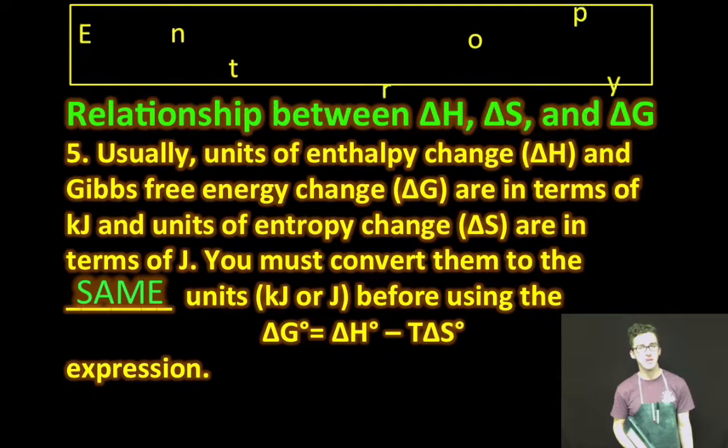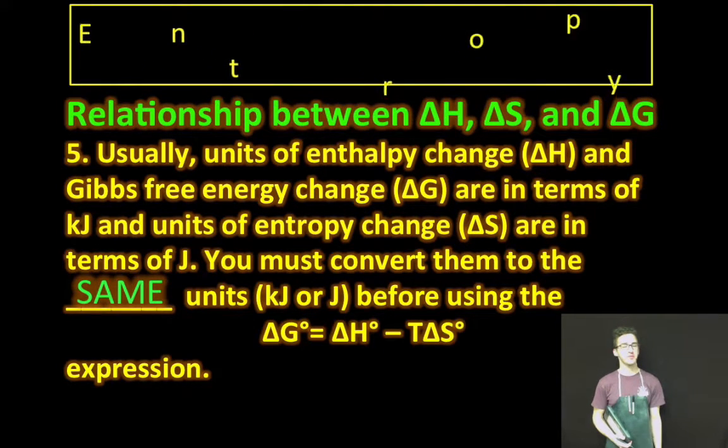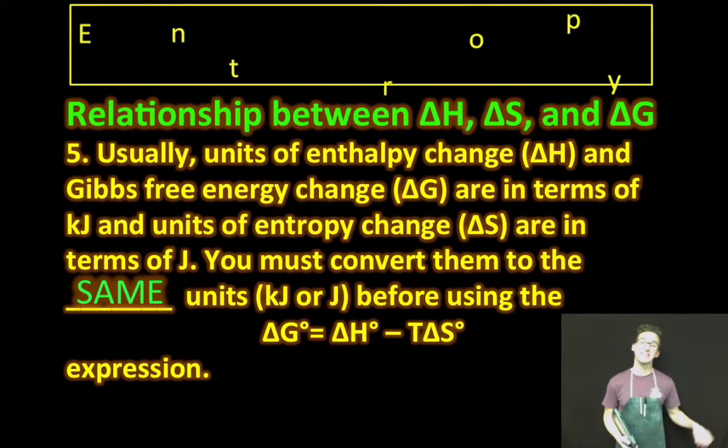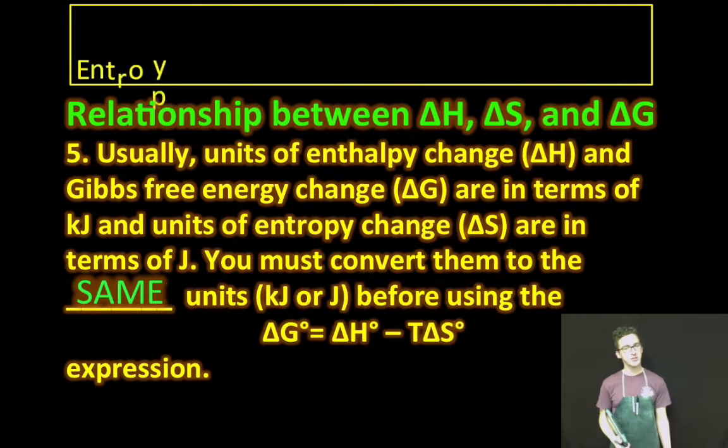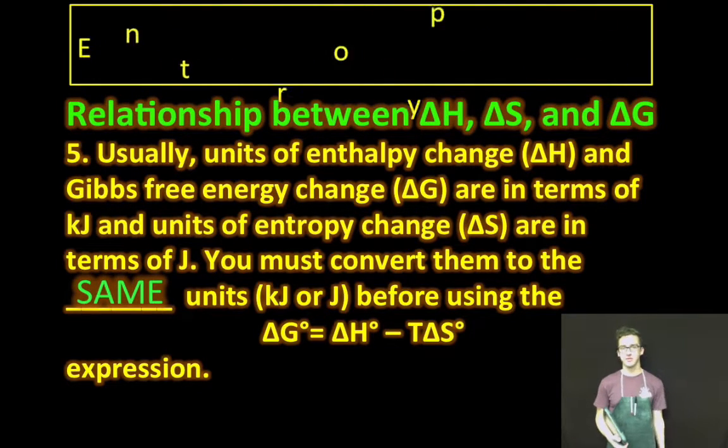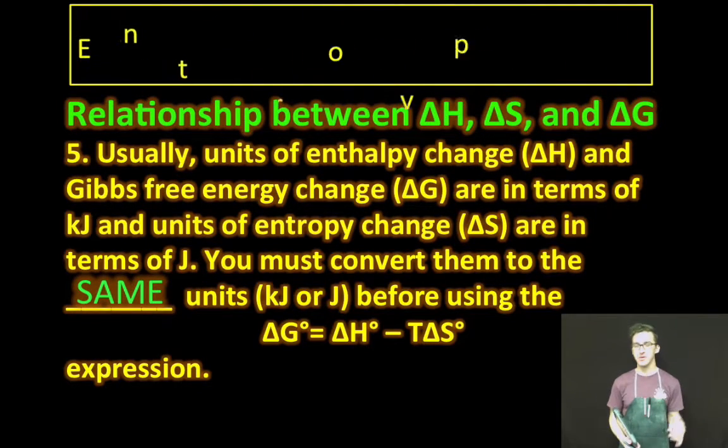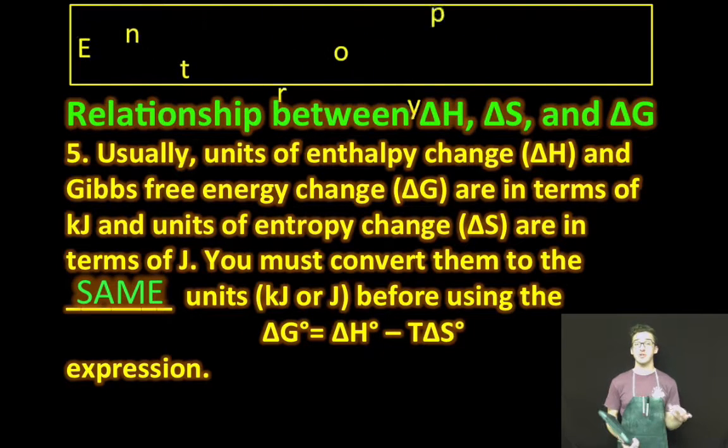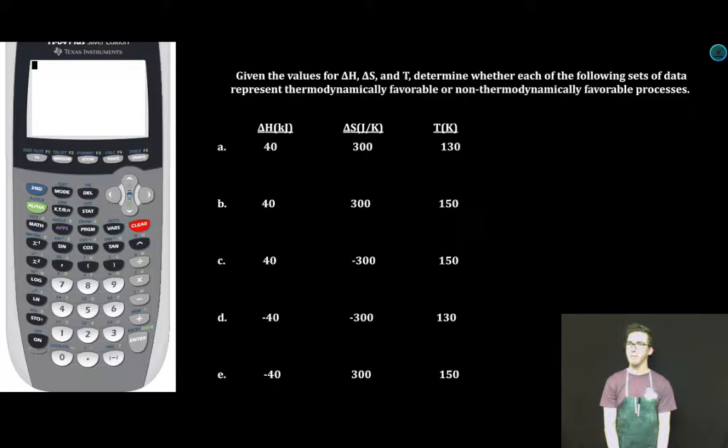And the last thing to think about: usually the units of enthalpy change and Gibbs free energy change are in terms of kilojoules, and units of entropy change are in terms of joules. So common error that is made when working through these types of problems is failing to ensure that your units are the same before working through that equation. One of the most important formulas when it comes to determine thermodynamic favorability of a reaction. You guessed it, here it is.